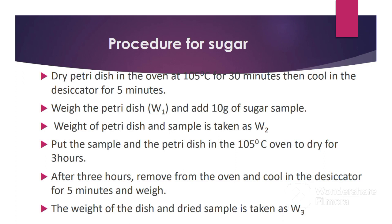Below is the procedure for moisture analysis of a sugar sample. First, dry the petri dish in the oven at 105 degrees Celsius for 30 minutes, then cool in the desiccator for 5 minutes. The reason the petri dish is dried and cooled is to remove any moisture that might be on the dish. Next, weigh the petri dish and record this weight as W1, then add 10 grams of sugar sample and record the weight of the petri dish plus sample as W2. Put the sample and petri dish in the oven to dry for three hours. After three hours, remove the sample and petri dish from the oven, cool in the desiccator for five minutes, and weigh. Record the weight of the dish and dried sample as W3.